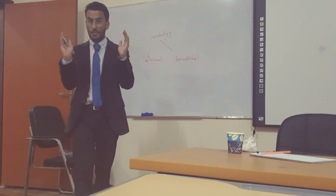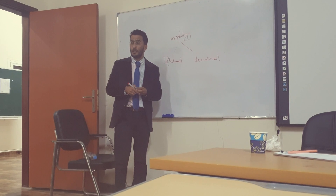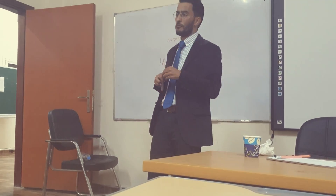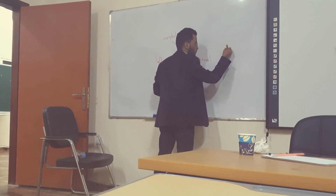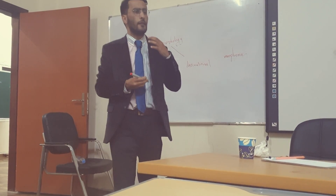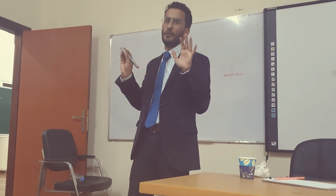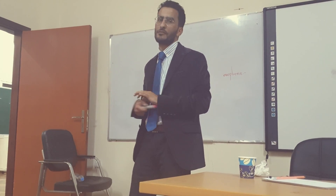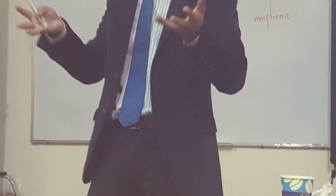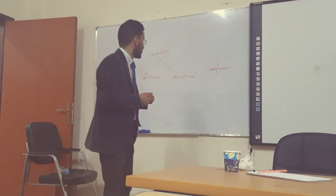Now, we will look at word formation in English. Before we start the difference between inflectional and derivational morphology, you must know the most meaningful part in a word: the morpheme. A morpheme means the smallest meaningful part of a word. For example, possessiveness, progressive -ING in English — these affixations are the smallest meaningful parts of any given word in English. These are the morphemes.